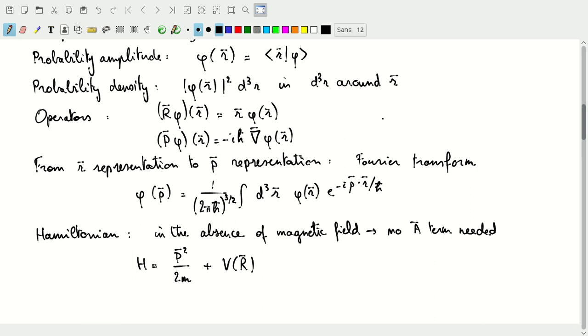We can move from our representation in R to a representation in p, just as we did earlier from x to p. This will be a Fourier transform. Because we have a three-dimensional integral, we pick up three factors of one over 2πℏ with a square root, so we get our prefactor of one over (2πℏ)^(3/2), and then we integrate over our Fourier kernel with φ now dependent on a vector R.